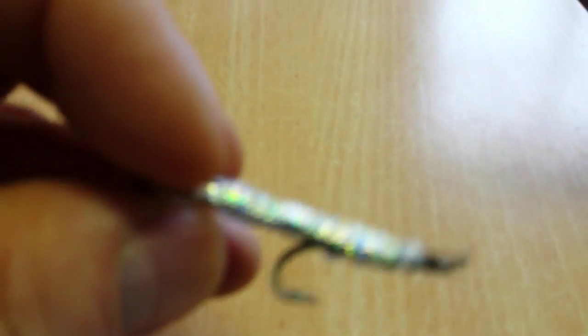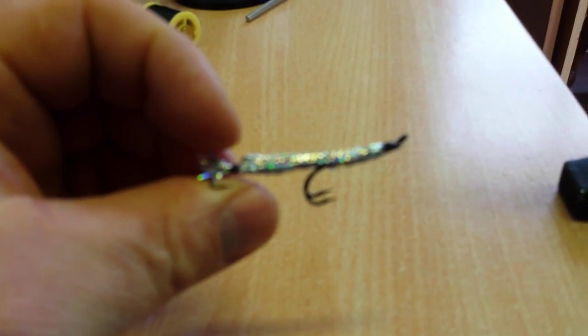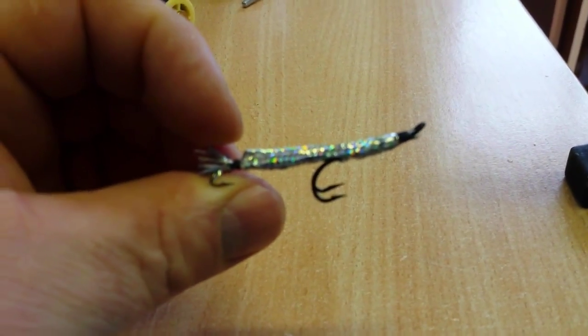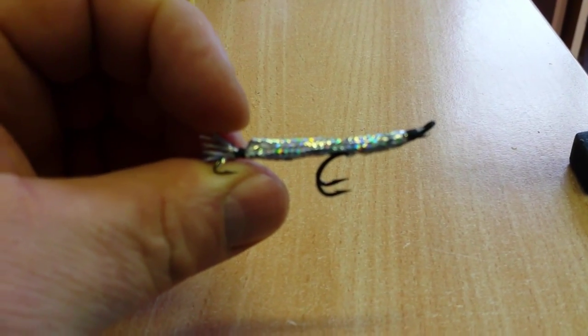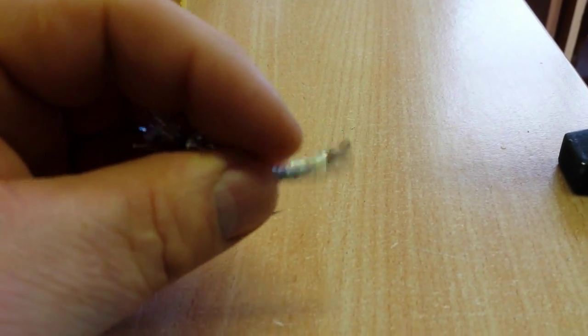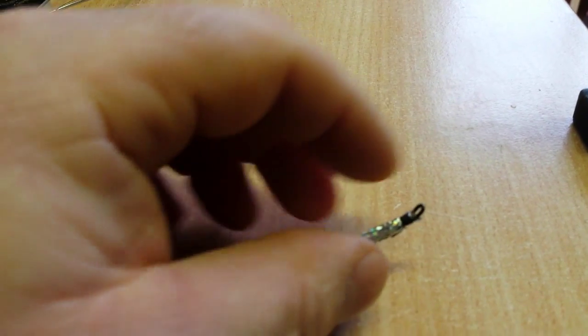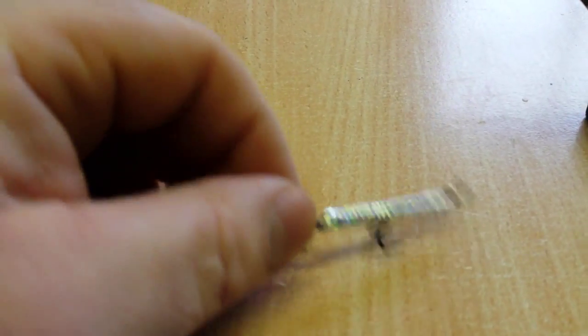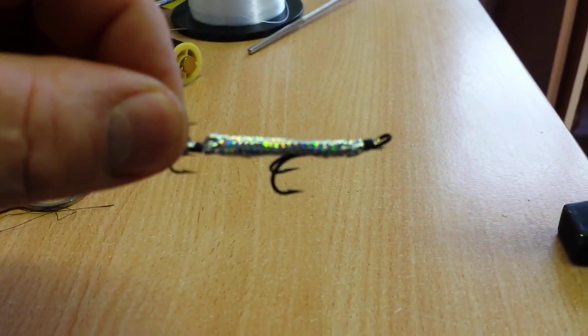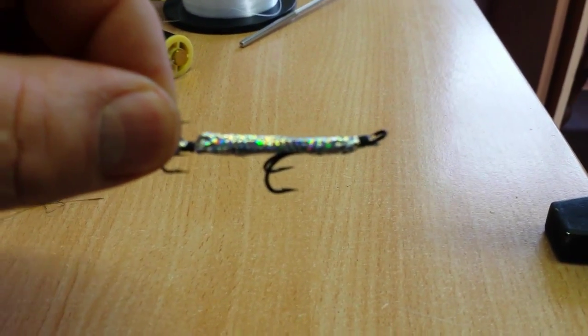Now the Maillard tubing is delicate stuff and you'd be tempted to say that I'll varnish it and that'll make it stronger. When you varnish it, it ruins the fly. It doesn't work properly. The Maillard tubing as it is, the water goes inside the Maillard tubing of the river. The river water fills up the fly and it fishes beautifully in the water. It's a deadly fly.